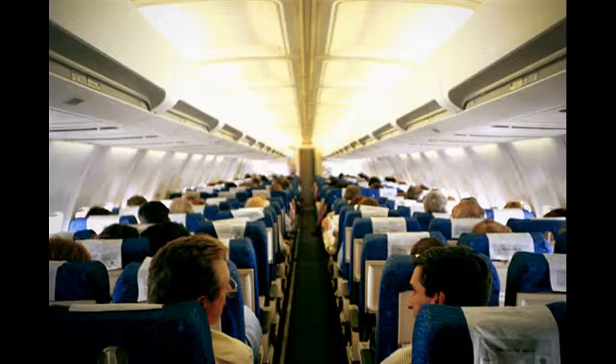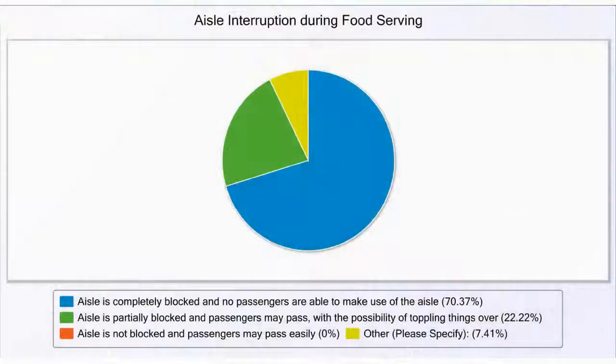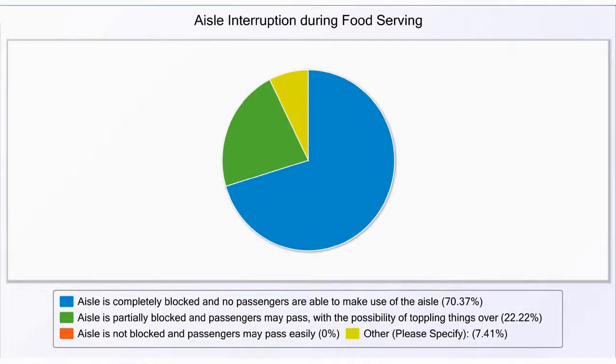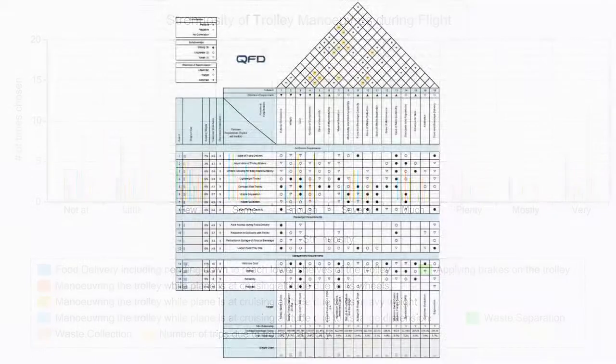This helped us to better identify the needs of our customers, including aisle interruption, ease of maneuvering and braking of the trolley. The next step was to prepare the QFD so as to translate these customer requirements into functional requirements.